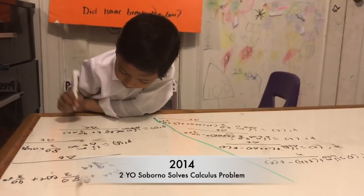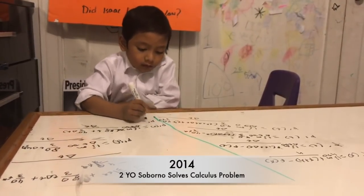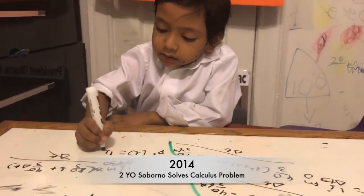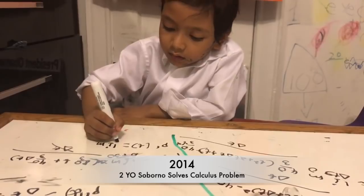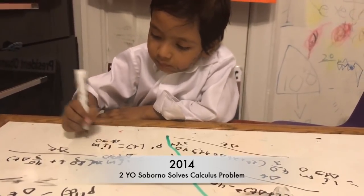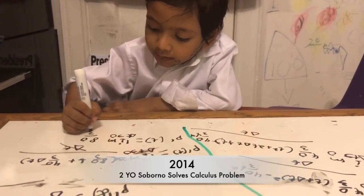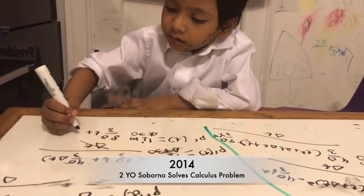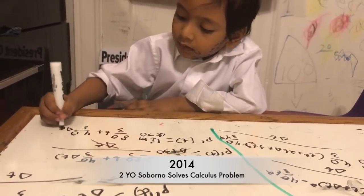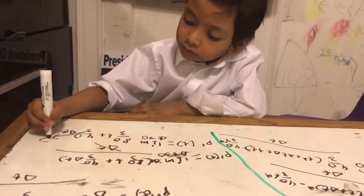Delta T, delta T cancel. P prime of T is equal to the limit as delta T goes to zero. 80 over 3T plus 40 over 3 delta T. 40 over 3 delta T goes to zero.